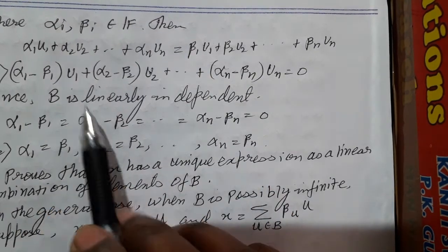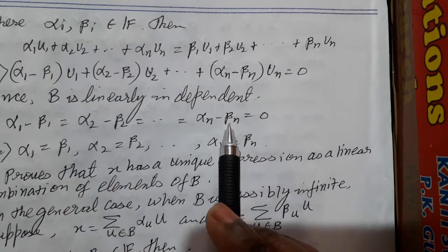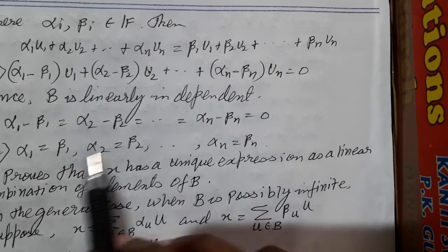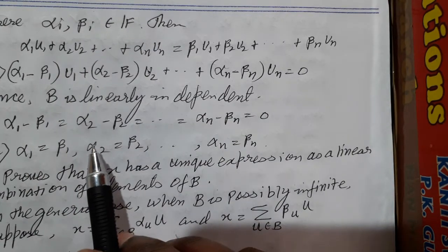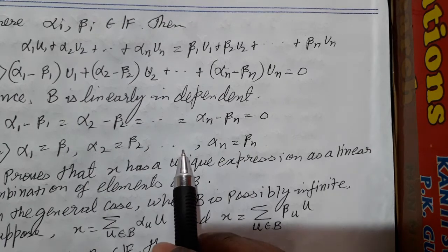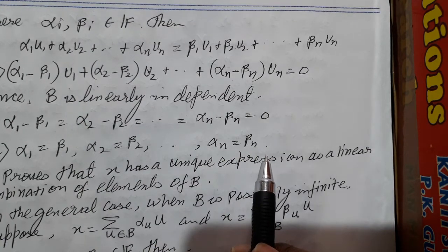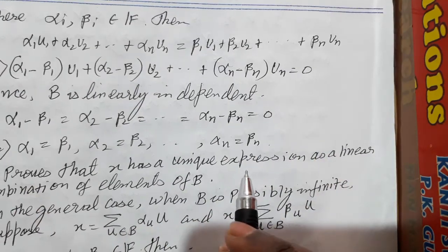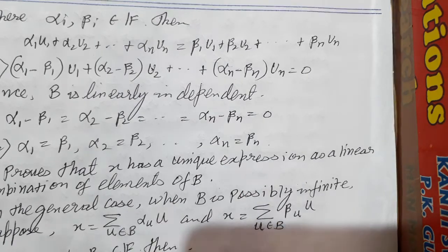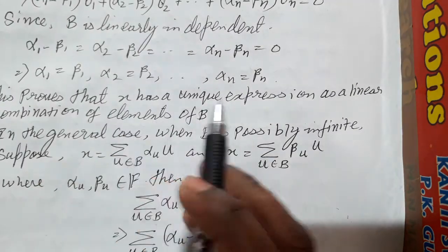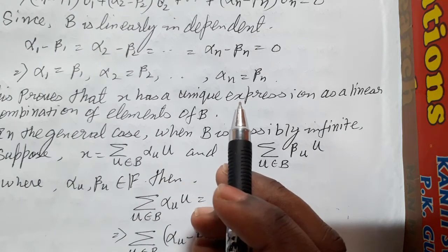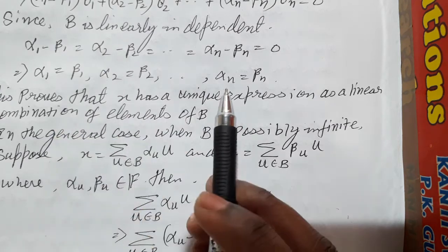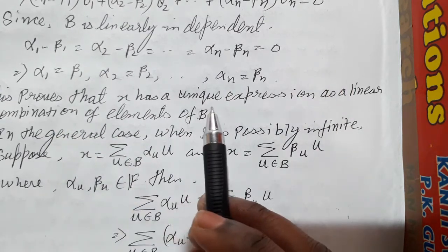So we have alpha_1 minus beta_1 = 0, alpha_2 minus beta_2 = 0, ..., alpha_n minus beta_n = 0. This implies alpha_1 = beta_1, alpha_2 = beta_2, and alpha_n = beta_n. So we have shown that X can be written as a unique expression as a linear combination of the elements of B.